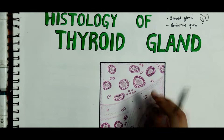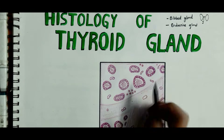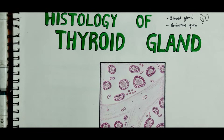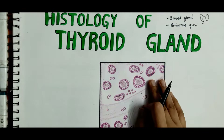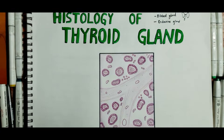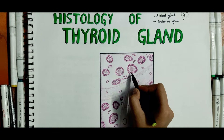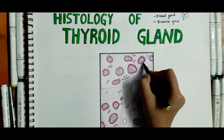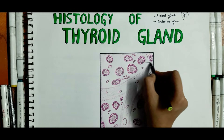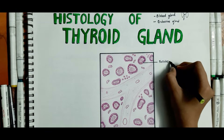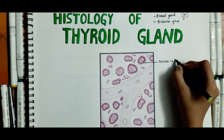The thyroid is a unique endocrine gland because it stores a large quantity of its hormonal secretion in the form of colloid. Coming to the proper histology of the thyroid, the thyroid gland is made up of follicles lined by cuboidal epithelium. These are the follicles lined by cuboidal epithelium.